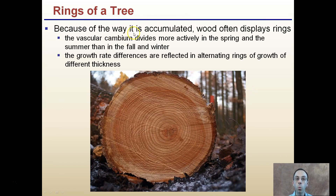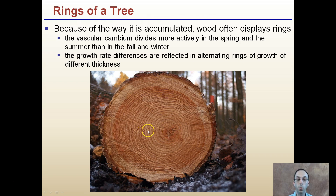Rings of a tree: because of the way secondary xylem accumulates, wood often displays rings. The vascular cambium divides more actively in the spring and summer than in the fall and winter, and these growth rate differences are reflected in alternating rings of different thicknesses, as you can see here. In this early part of its life, the tree grew very quickly — you can see the large space between the rings — however, at this point the rings are much closer together, indicating growth from year to year was much slower.